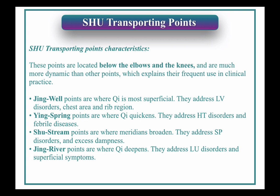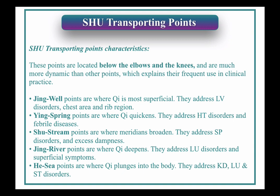The Jing River points, which are now closer to the elbow and closer to the knee, are where Qi deepens. They address lung disorders and superficial symptoms because they're more metal-related points. And finally, the He-Sea points, which are all at the elbows and at the knee, are where Qi plunges into the body. They address kidney, lung, and stomach disorders. They're very, very strong points.